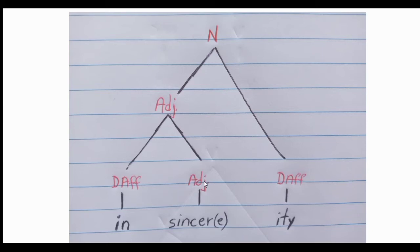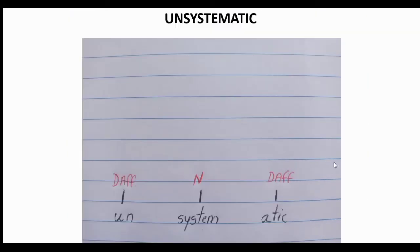You label each part of the word depending on the different combinations you make. If you combine 'sincere' with 'in-' you get another adjective, but if you combine the adjective 'insincere' with the suffix '-ity' then you get a noun — 'insincerity'. If you have any questions, please write a comment and I will answer any doubt you may have.